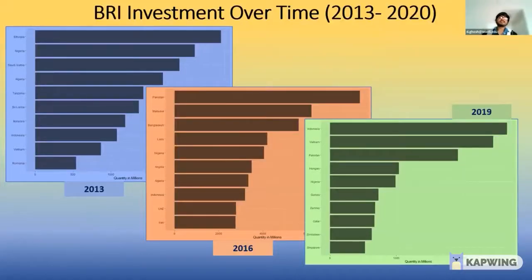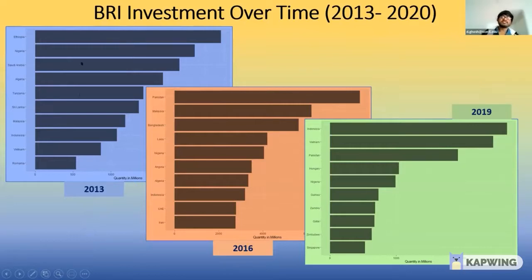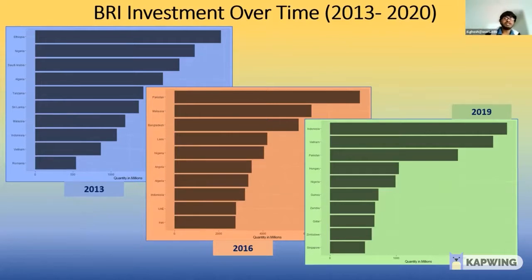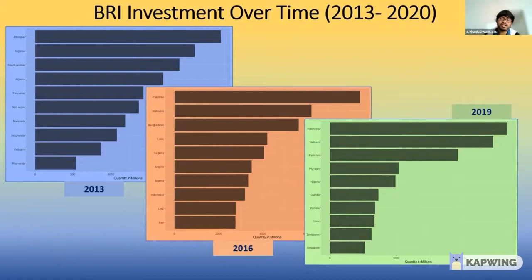The next segment covers BRI investment and land acquisition data. Here are three snapshots of China's BRI investment over time: 2013, 2016, and 2019. In 2013, investment was mainly concentrated in African regions like Ethiopia and Nigeria. Towards the middle period, the concentration shifted to South Asia like Pakistan, Bangladesh, and Malaysia — Pakistan was the top BRI investment destination for three consecutive years. In recent years, the concentration has shifted to Southeast Asian countries like Indonesia and Vietnam.